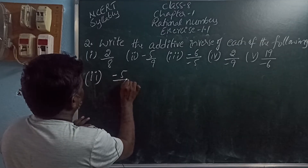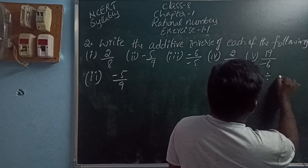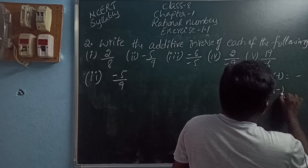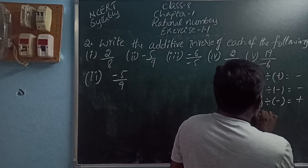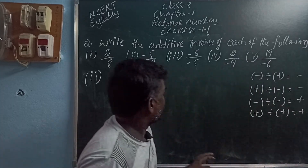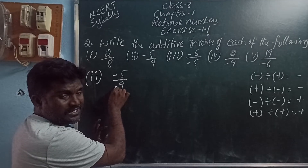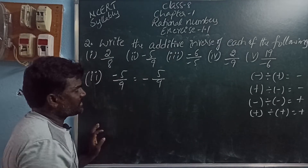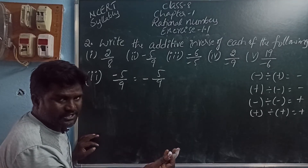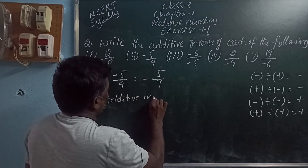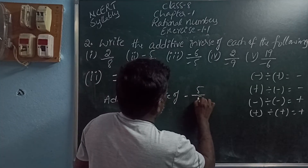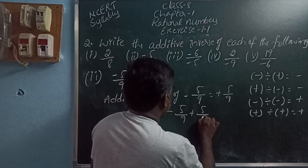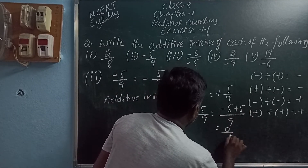Second: minus 5 by 9. Minus divided by plus is minus, minus divided by minus is plus, plus divided by plus is plus. Here minus 5 by 9 means minus by plus, giving us a negative number. The sign is minus. So the additive inverse of minus 5 by 9 is plus 5 by 9. When adding these two: minus 5 by 9 plus 5 by 9. Minus 5 plus 5 is 0. 0 by 9 is 0. Zero is the identity element.